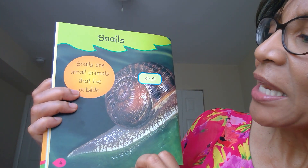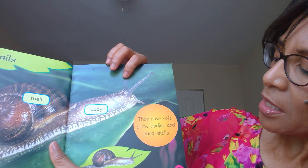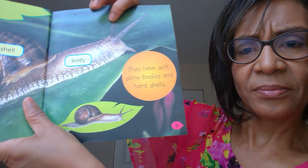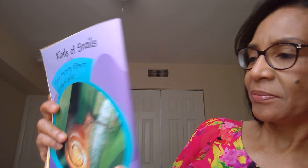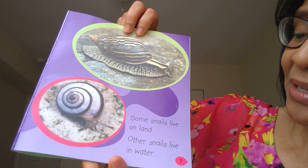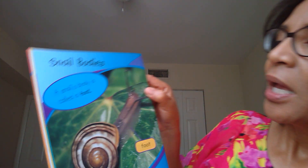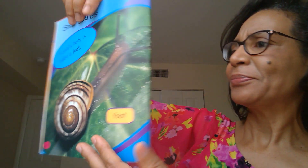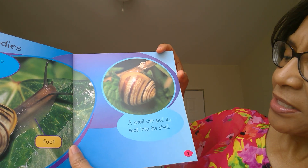Snails. 'Snails are small animals that live outside.' Let's see the snail shell and the body — 'they have soft slimy bodies and hard shells.' Kinds of Snails — here's another chapter title. 'There are many different kinds of snails. Some snails live on land, other snails live in water.' Snail Bodies — 'a snail's body is called a foot.' Interesting, isn't it? There is a label — that's a text feature. 'A snail can pull its foot into its shell.'